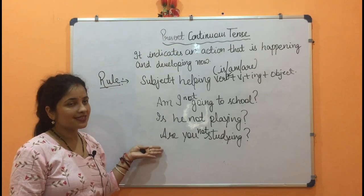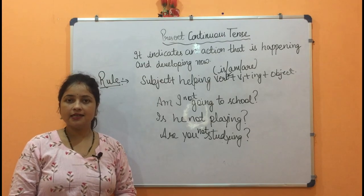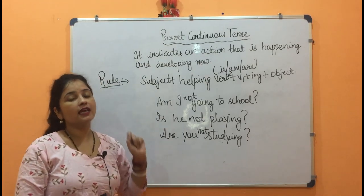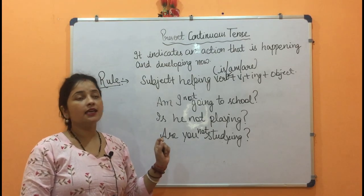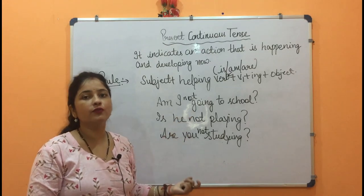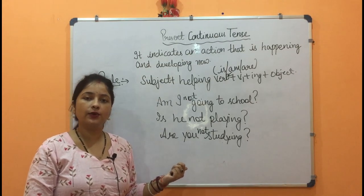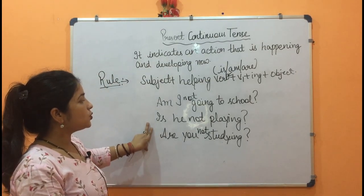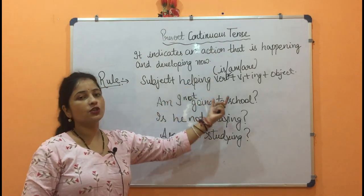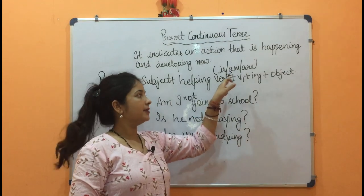So these are the four types of sentences under the present continuous tense. Every tense has three types — present, past, and future — and under every tense there are four subtypes: positive, negative, interrogative, and interrogative negative. Now you know the rule: helping verb comes first, then verb, then object.